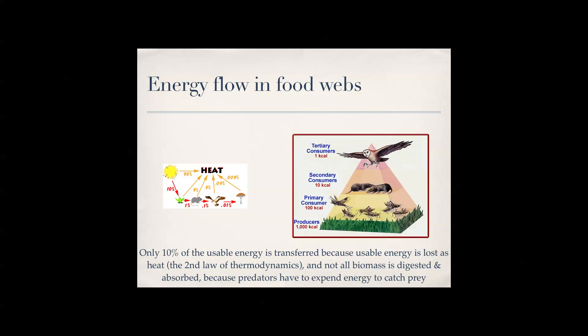When primary consumers eat the producers or grass, they only get 10 percent of the energy — that's 100 kilocalories. Secondary consumers only get 10 kilocalories, and tertiary consumers only get 1 kilocalorie. That's why if you eat a lot of meat, you're not getting as much energy as you do from eating producers such as grasses and other photosynthetic life.